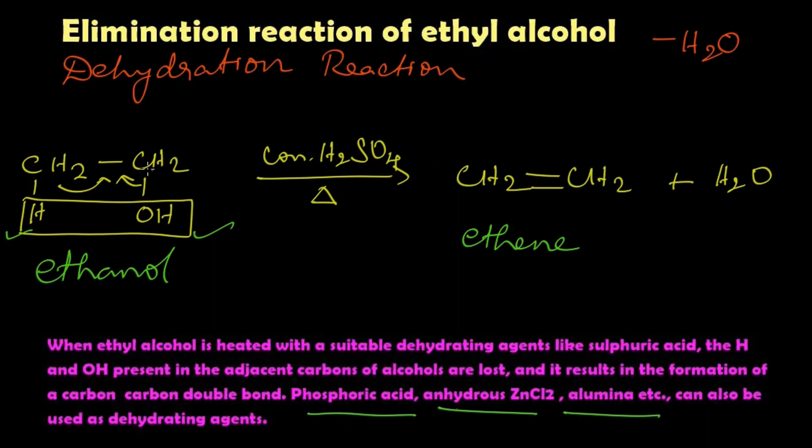And it results in the formation of a carbon-carbon double bond, the alkene family, that is ethylene or ethene. Phosphoric acid, anhydrous zinc chloride, alumina, etc. can also be used as dehydrating agents instead of concentrated sulfuric acid. Thank you.